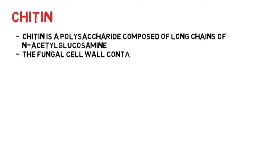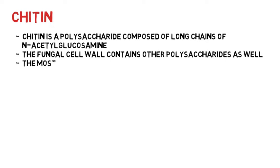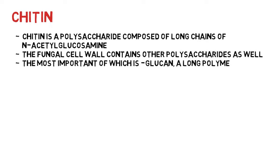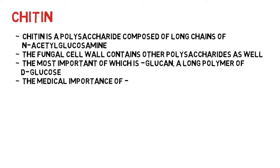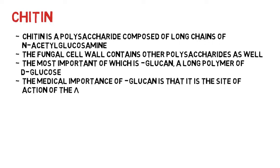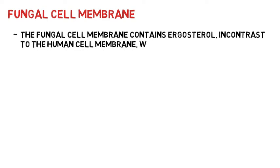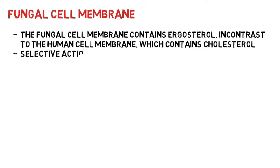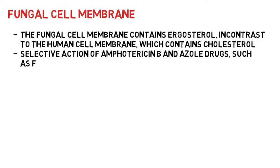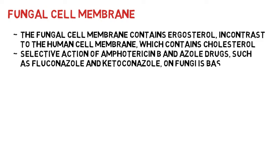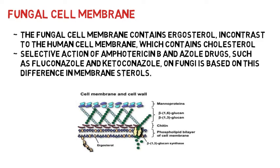In addition to chitin, the fungal cell wall contains other polysaccharides as well, most important of which is beta-glucan, a long polymer of D-glucose. Its medical importance resides in its mode of action, as it is the site of action of antifungal drug caspofungin. The fungal cell membrane contains ergosterols, in contrast to the human cell membrane which contains cholesterol. The selective action of antifungal drugs such as amphotericin B and azole drugs such as fluconazole and ketoconazole is based on the difference of sterols in these membranes.